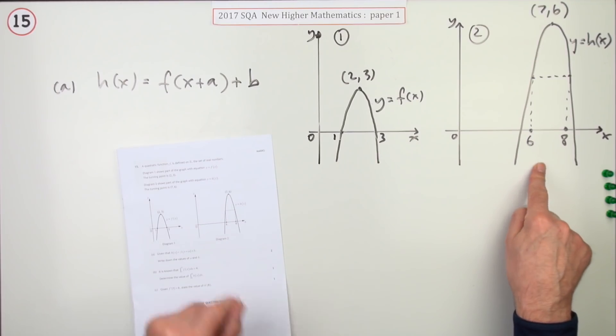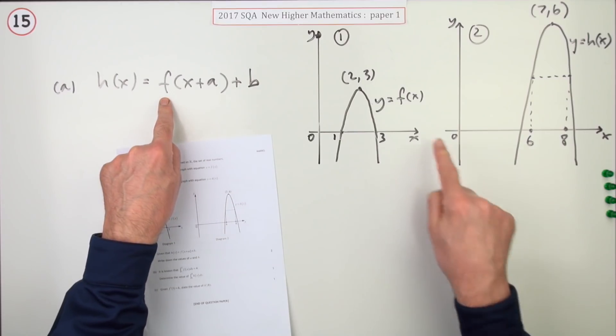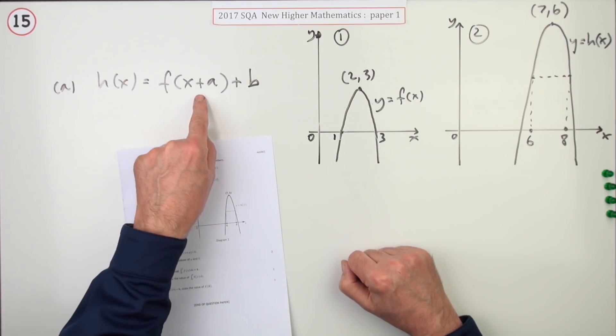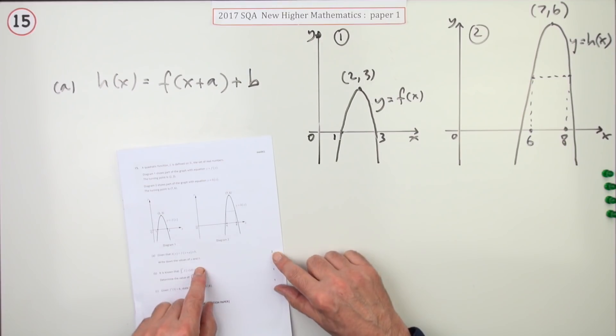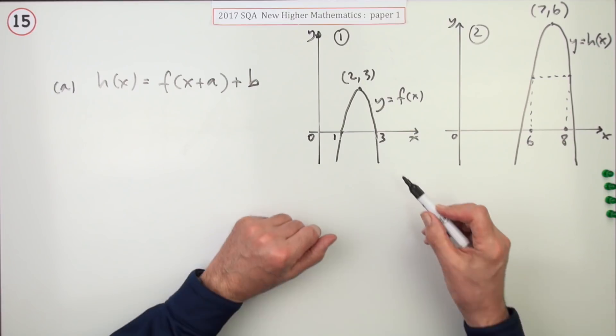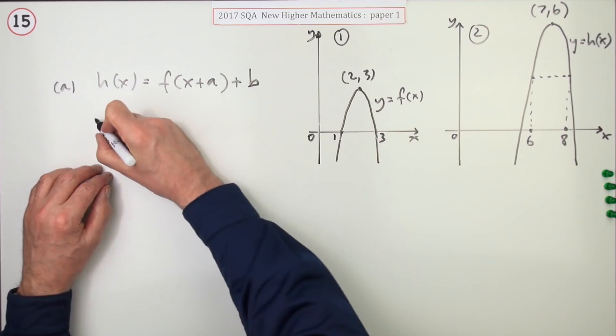It says the second one here is just the first one, the f of x, that's been shifted along and shifted up. And all you have to do for two marks is write down the values of those. Well, you can see how much has been shifted. It went from 2, 3, maybe I'll put this down, you don't want to show any working.